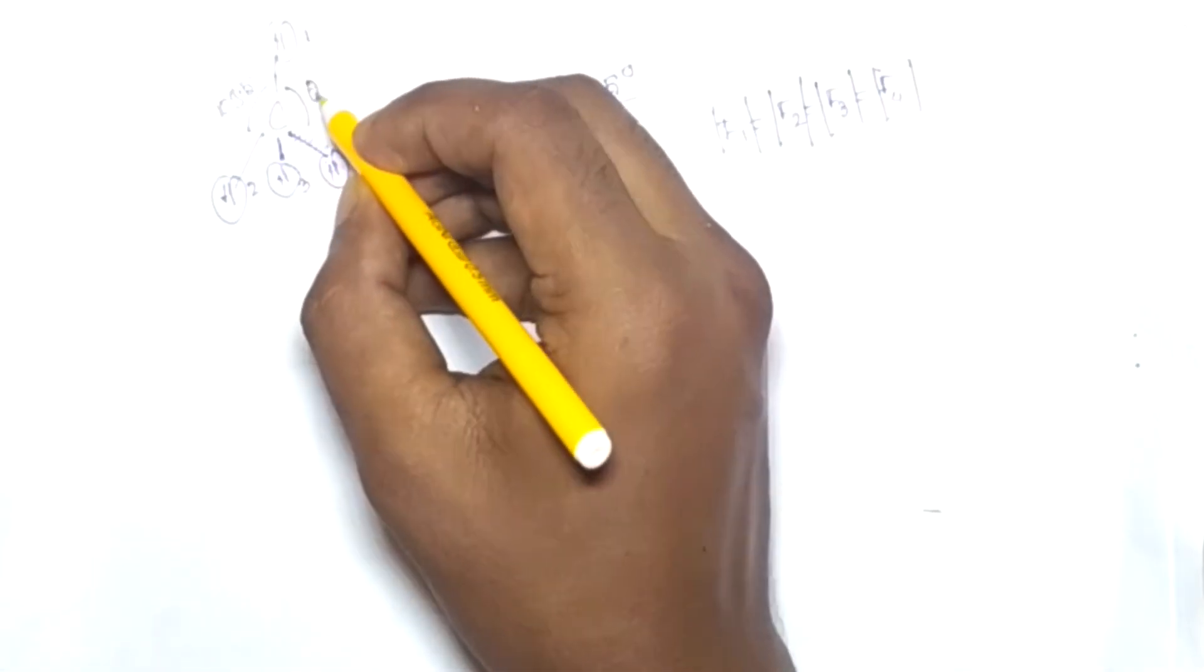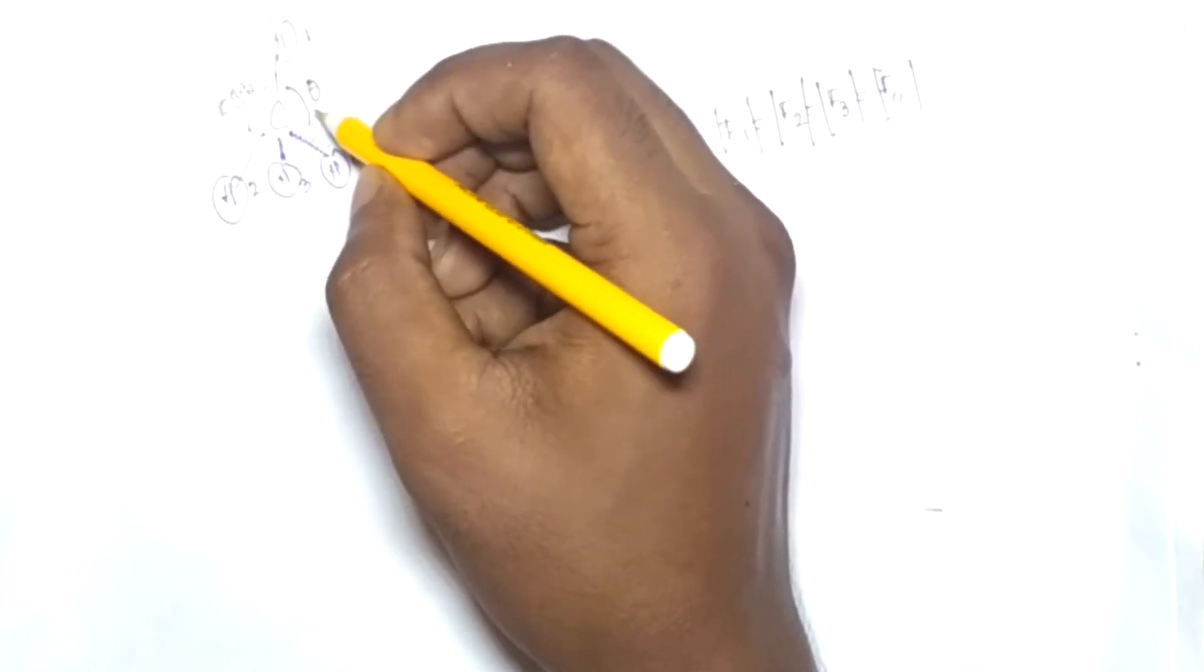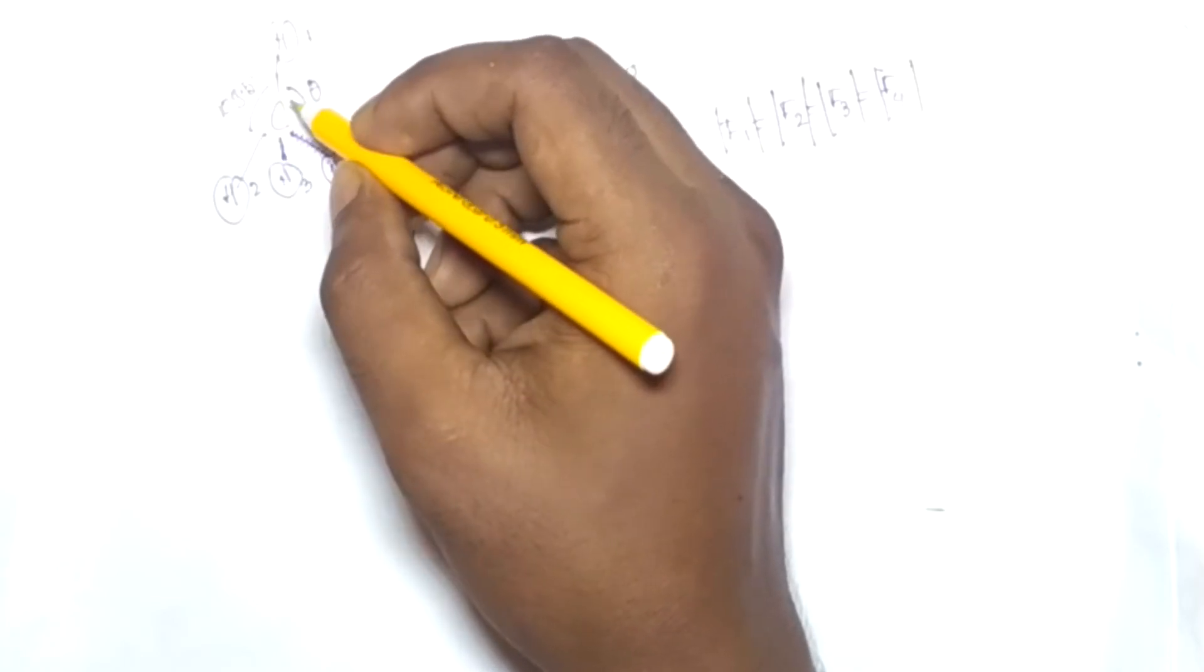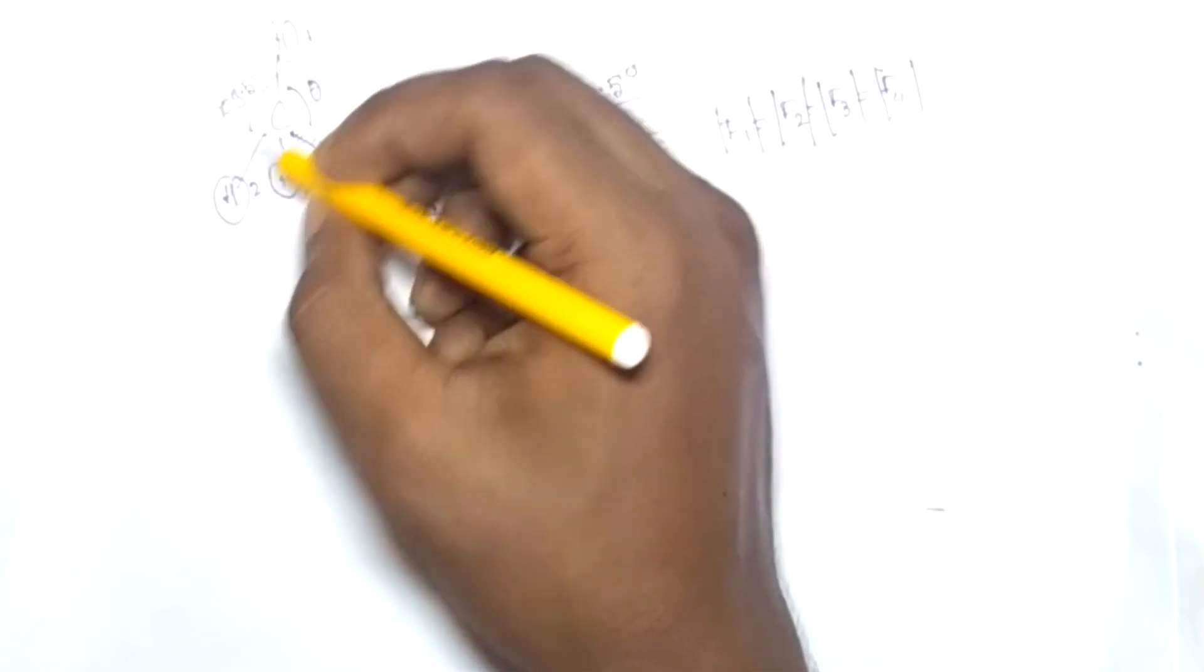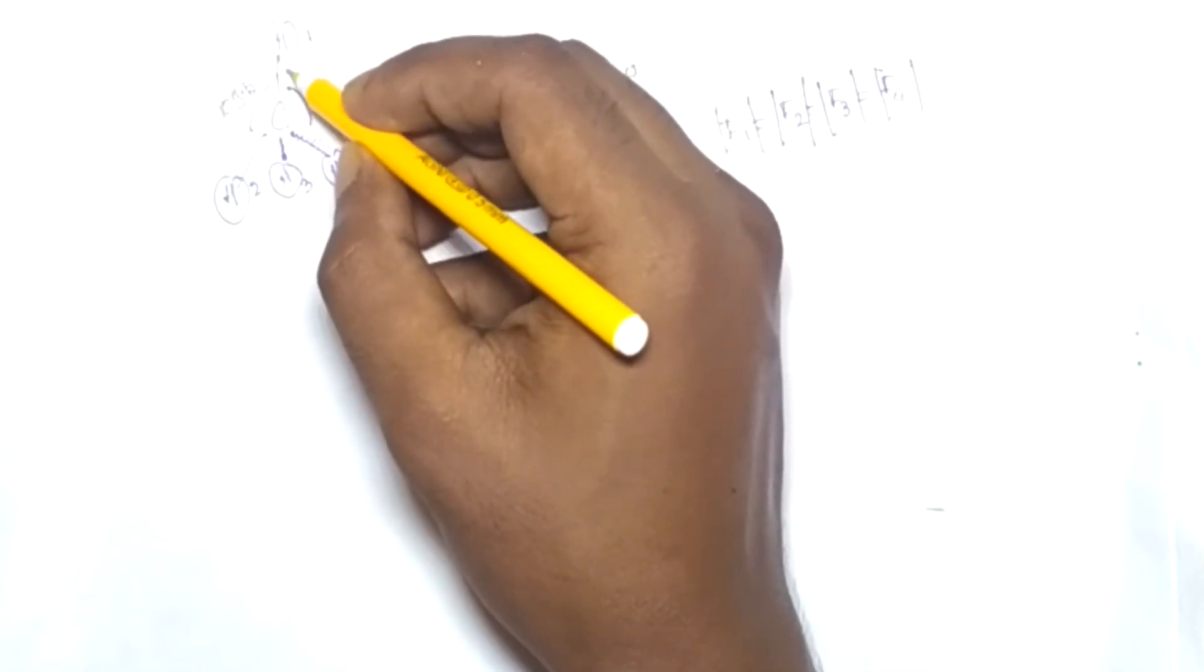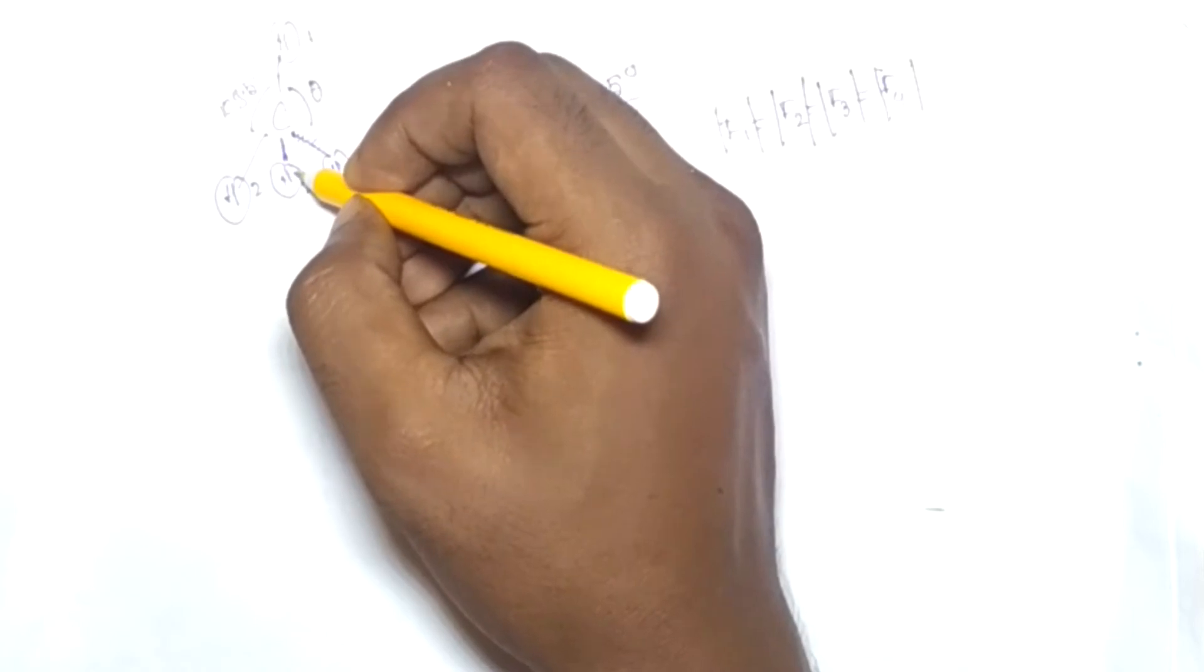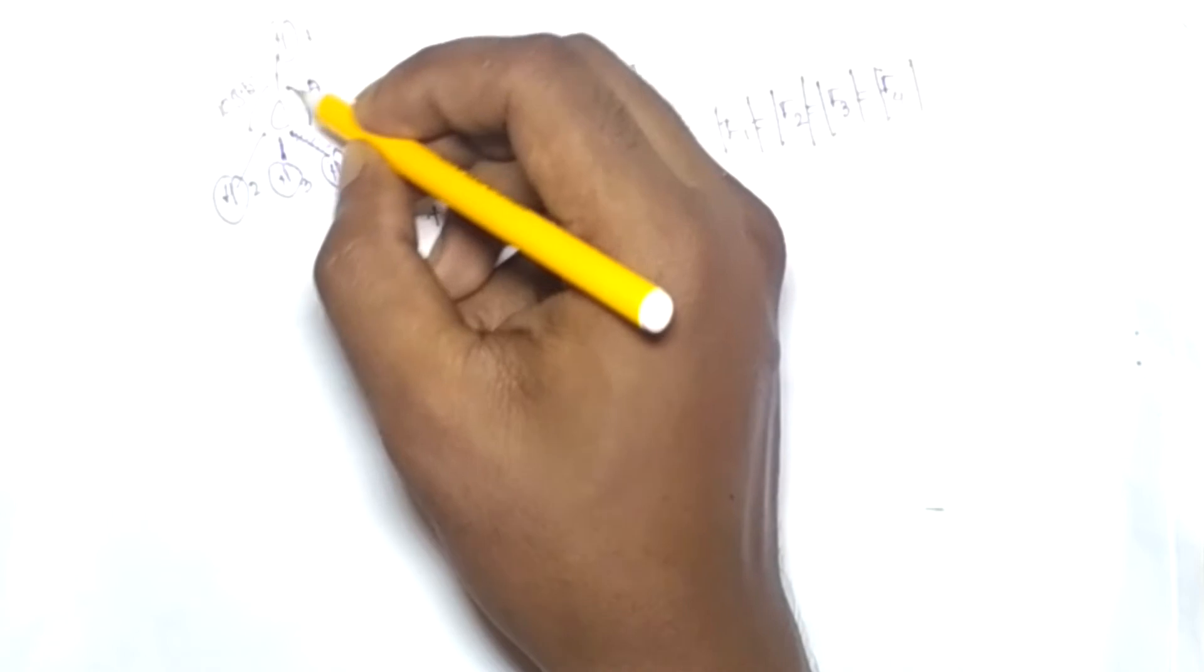Now the angle which we are going to calculate is theta. If we are taking a theta, now whatever the angle theta, this angle is same for all. And this is another assumption from the symmetry that if this angle is theta, this angle will also be theta, and the angle between one and three will also be theta.